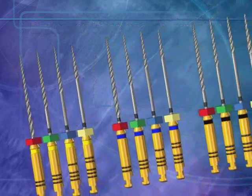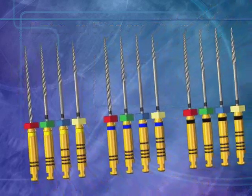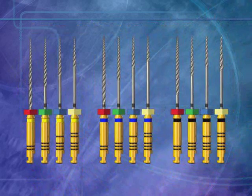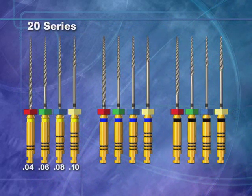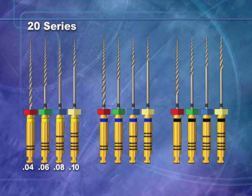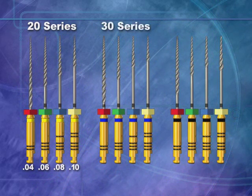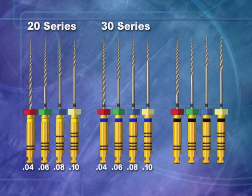The ProSystem GT line is as follows. There are four instruments with a 20 tip for instrumenting small canals. They are the .10, the .08, the .06, and the .04. There are four instruments with a 30 tip for instrumenting medium-sized canals. Their tapers are also .10, .08, .06, and .04.